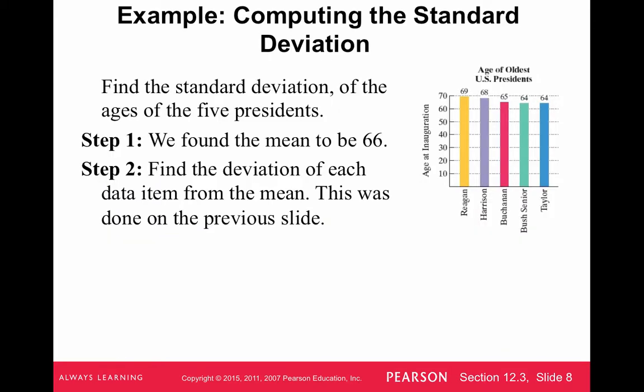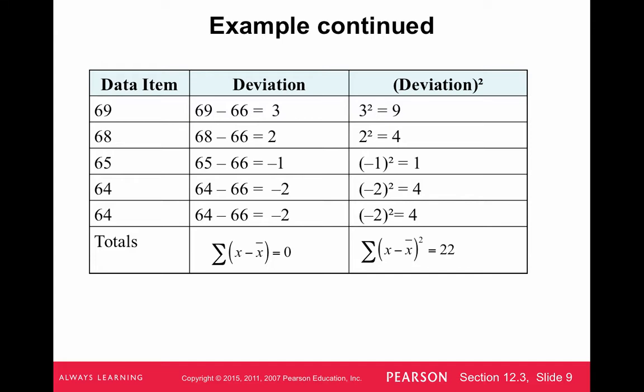So we're going to find the standard deviation of this data set. So we already found the mean of 66, and then we're going to organize these deviations in a table like we did before. So the first column of the table is the data items. The second column is the deviation, so we take each data item and subtract the mean. And then it's nice and easy in the third column to take those deviations and square them. Notice that when you square any number, it will be a positive number. That's something I noticed earlier on in the class that some of you were missing. But remember, when you square a negative number, it's a positive number, and that's why we're doing this. So here are all the deviations squared.